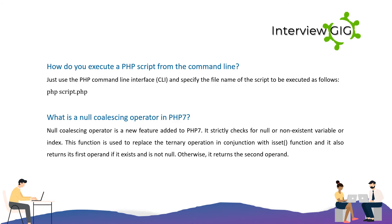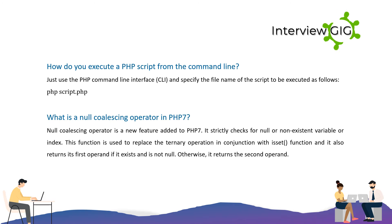What is the null coalescing operator in PHP 7? The null coalescing operator is a new feature added to PHP 7. It strictly checks for a null or non-existent variable or index. This operator is used to replace the ternary operation in conjunction with the isset function. It returns its first operand if it exists and is not null; otherwise, it returns the second operand.